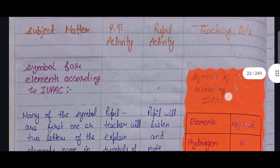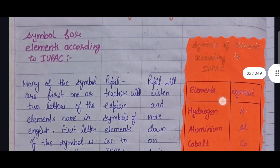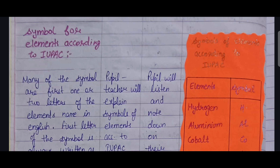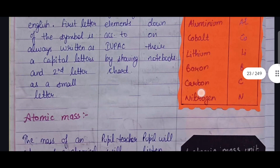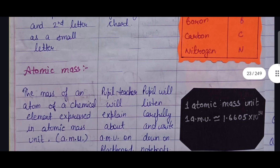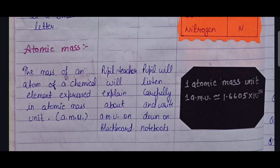Again using the four-column format: subject matter is symbols of elements according to IUPAC name. The PT will explain symbols of elements according to IUPAC by showing a chart. Pupils will listen and also write in their notebooks. A chart representing some elements with their symbols is used as a teaching aid. Next, atomic mass — its definition is explained by the PT, students listen and write, with blackboard work as the teaching aid.